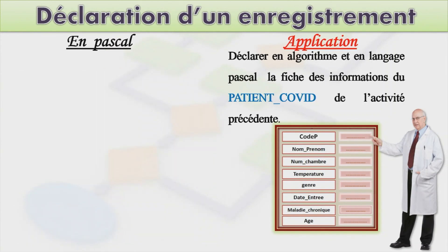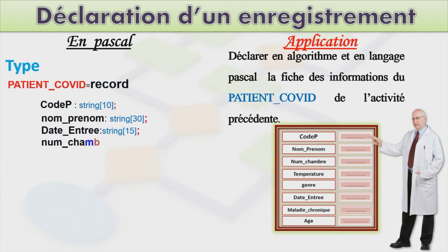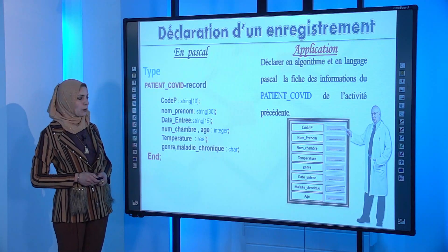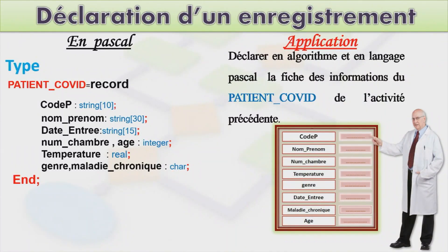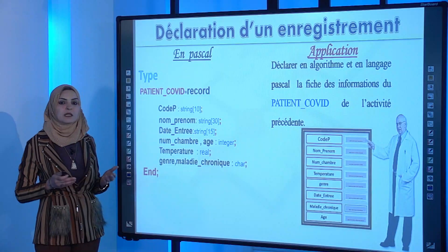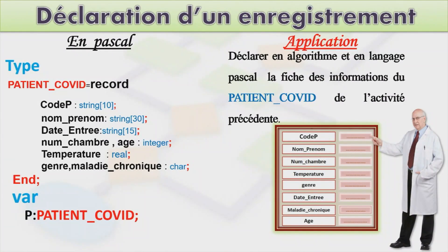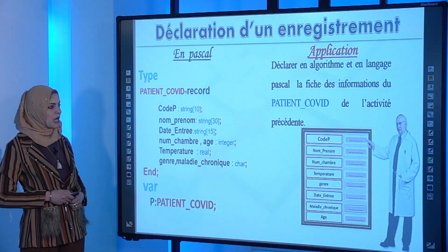En Pascal, avec le mot-clé type, on déclare patientCOVID = record, avec les champs : codeP : string[10] ; nomPrénom : string[30] ; dateEntrée : string[15] ; numéroChambre, âge : integer ; température : real ; genre, maladieCronique : char ; end ; Puis avec var, on déclare P : patientCOVID ;